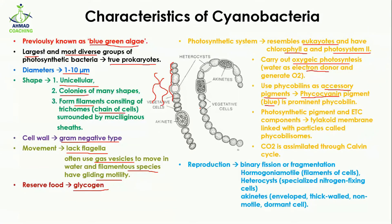They use phycobilins as accessory pigments. The prominent phycobilin is phycocyanin, which is a blue pigment present in cyanobacterial cells. The photosynthetic pigments and electron transport chain components are present in the thylakoid membrane and are linked with particles called phycobilisomes, so all these components are attached to the phycobilisomes.